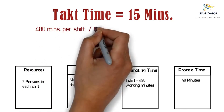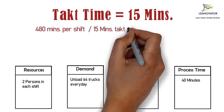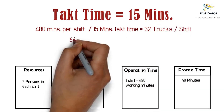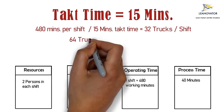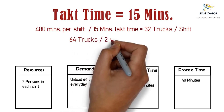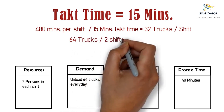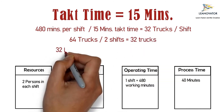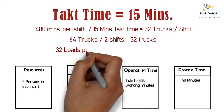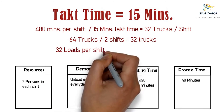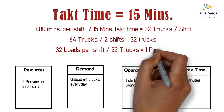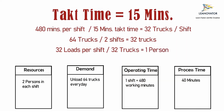Now we need to determine how many operators we require for the demand of 64 trucks per day. Since there are 480 minutes per shift, we divide it by the takt time of 15 minutes, which comes to 32 trucks per shift. Now we divide the demand — 64 trucks — by the number of shifts, which is 2, and that comes to 32. We then divide the 32 loads per shift by 32, which comes to 1 operator. This means we need only 1 operator to fulfill the customer demand. This is how we calculate takt time.